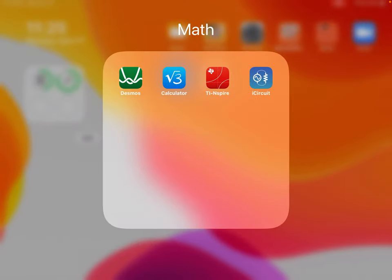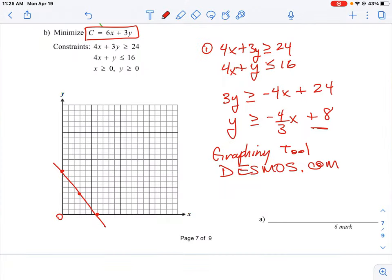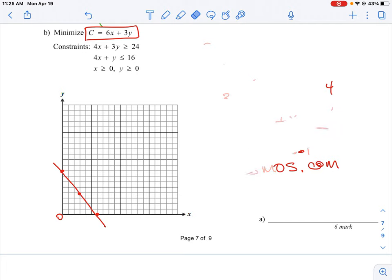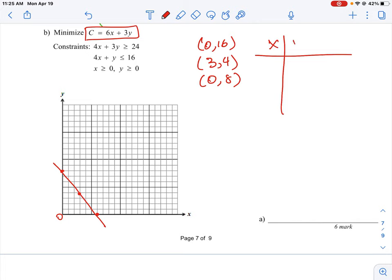Let's go back to our question. We want to minimize this equation, so I'm going to erase all this. We now have our points: (0, 16), (3, 4), and (0, 8). We'll do a little table with x, y, and C. We want to minimize our values.